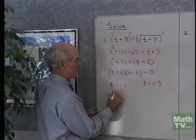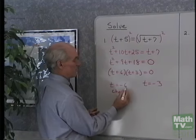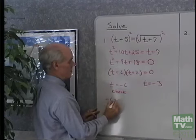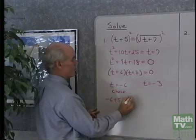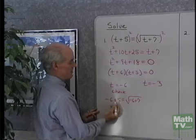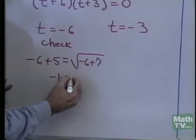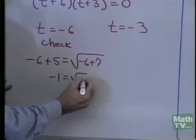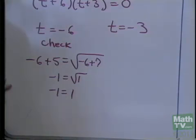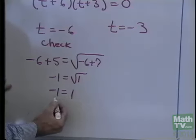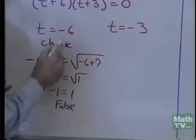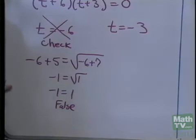I'm going to check t equals negative 6 in my original equation. I'll have negative 6 plus 5 equals square root of negative 6 plus 7. Negative 6 plus 5 is negative 1, and negative 6 plus 7 is 1, the square root of which is positive 1. These two are not equal to each other — that's a false statement. So this was an extraneous solution.